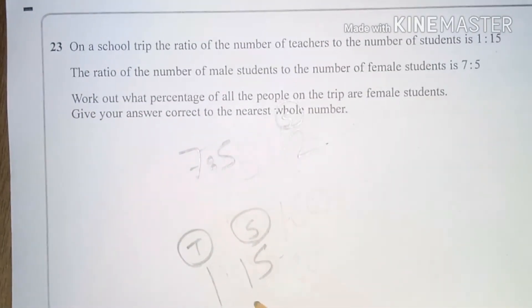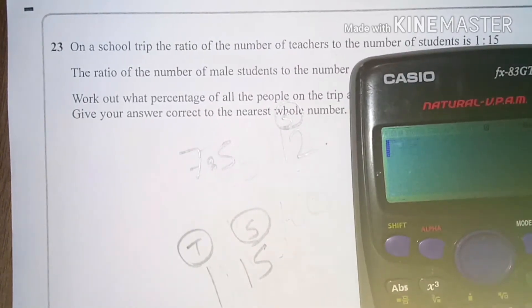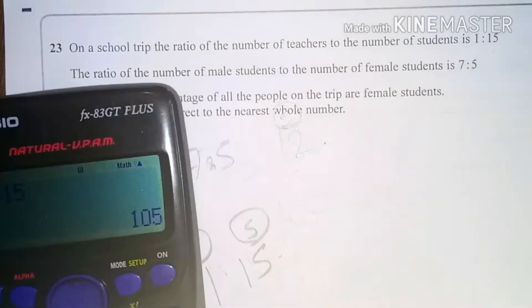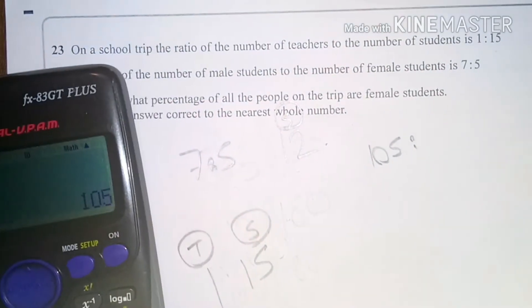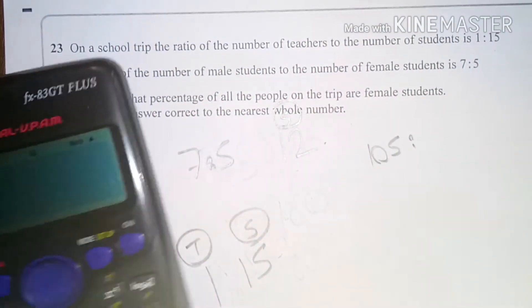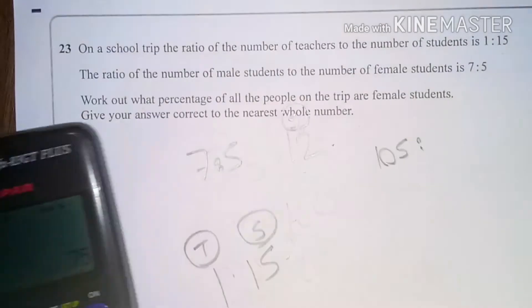going to times my first one by 15. Okay, so 7 times 15, which is 105, to 5 times 15, to 75.